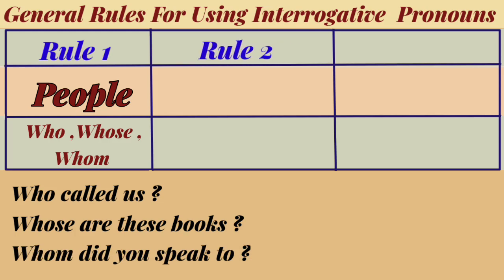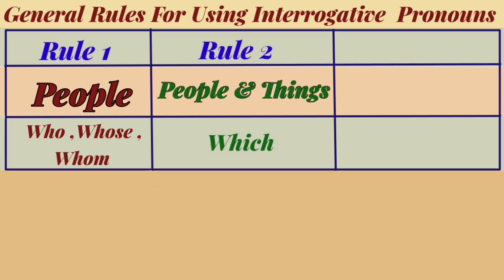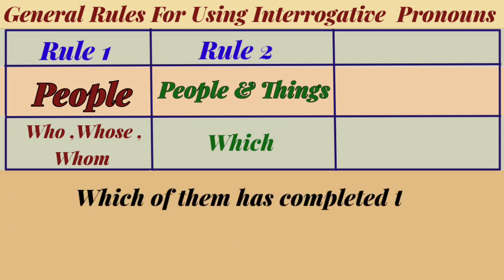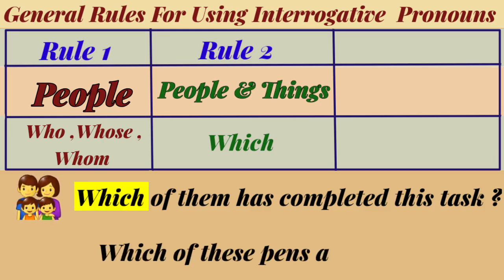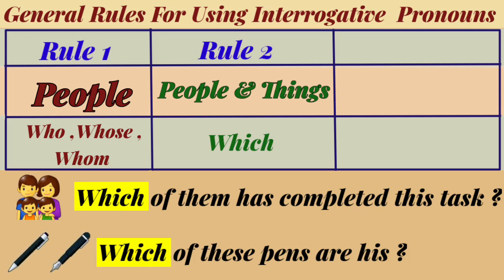Rule number two: which is used for both people and things. For example, which of them has completed this task? Here, which is used for people. Which of these pens are his? Here, which is used for things.